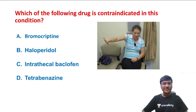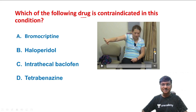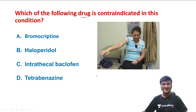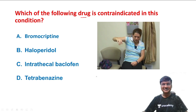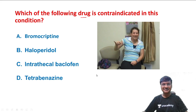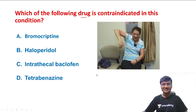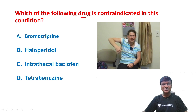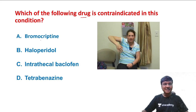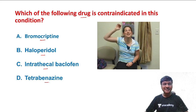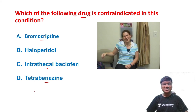Now for the clinical sign of the day: the question is which of the following drugs is contraindicated in this condition? The options are bromocriptine, haloperidol, intrathecal baclofen, and tetrabenazine. Let me show you the video — observe the involuntary movements.